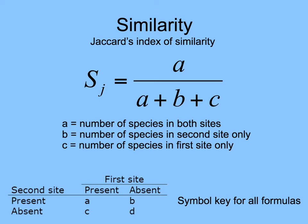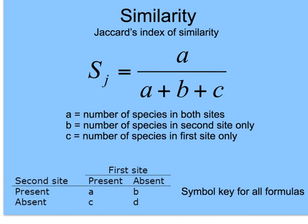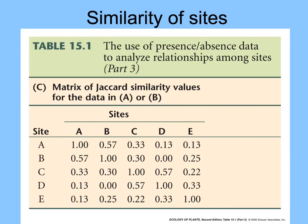Here's Jaccard's Index, which looks at the number of species in both sites divided by the sum of the number of species in the second site only, the number of species in the first site only, plus the total number of species. It also takes into account how many species are absent from both sites. Going back to those former tables from our book, here's the matrix of Jaccard similarity values for those data, with a value at each site.